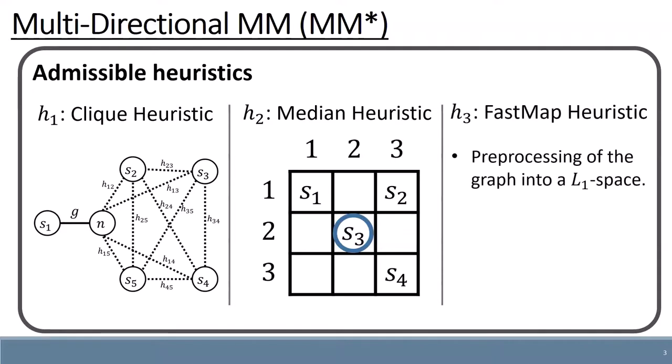H3, the fast-map heuristic, embeds the locations of the graph into an L1 space.